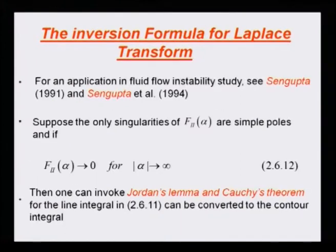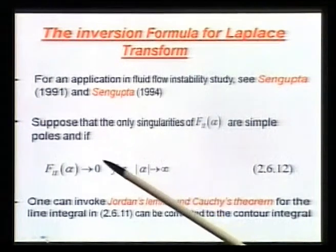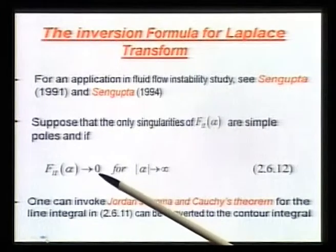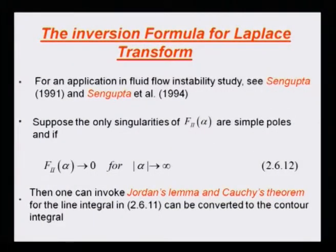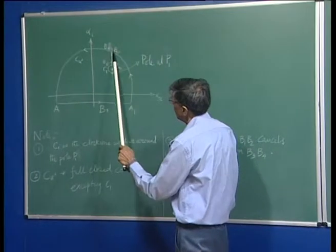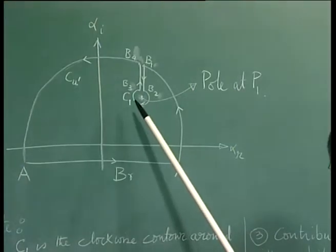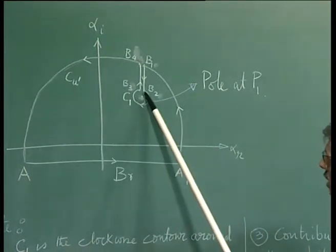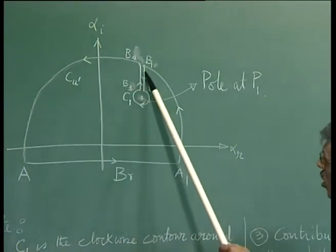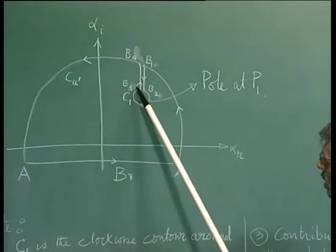We discussed how we could use this. If the transform has only simple poles and this quantity goes to zero — the transform goes to zero for alpha going to infinity — then we can use Jordan's Lemma. The Bromwich contour is something like this, constant alpha-i. What I could do is construct a closed contour where the simple poles are excluded. The pole at P1 is circumvented by indenting a contour around it, which is joined with the main contour with vertical lines b1, b2, b3, b4.